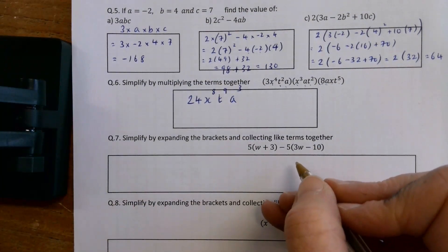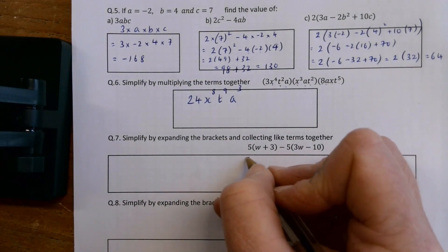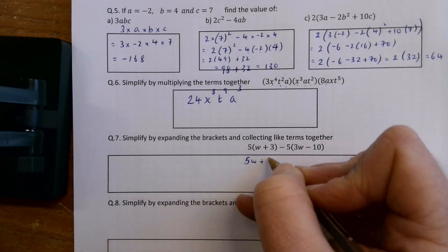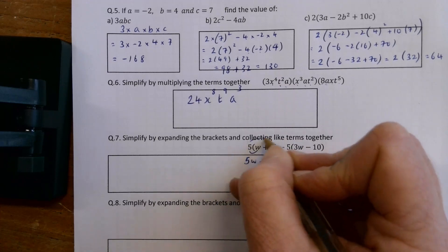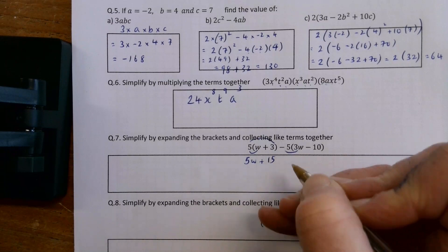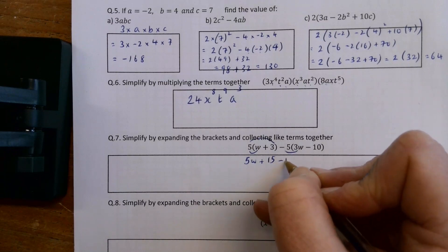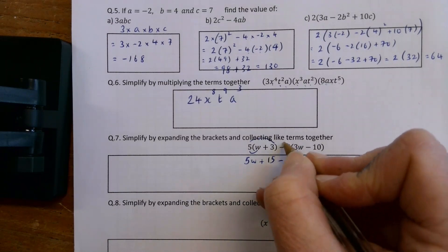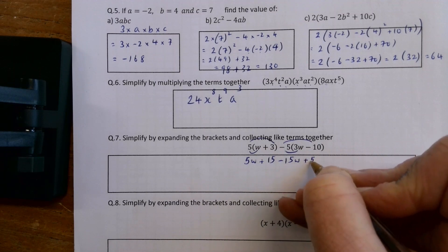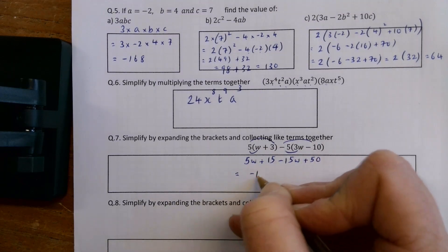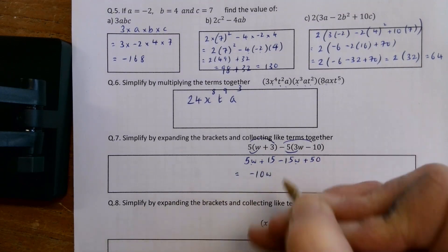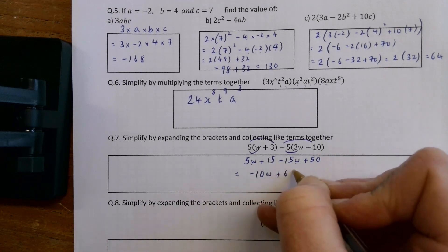Simplify by expanding the brackets and collecting like terms. So 5w plus 5 by 3 is 15, 5 by w, 5 by 3. Minus 5 by 3w is minus 15w. And minus 5 by minus 10 is plus 50. So I have minus 10w, that and that going together. And 15 plus 50 is 65.